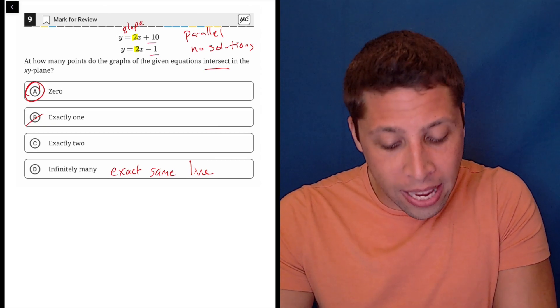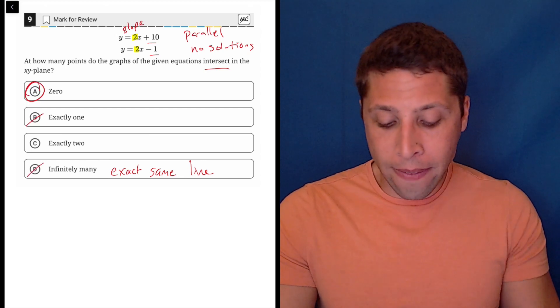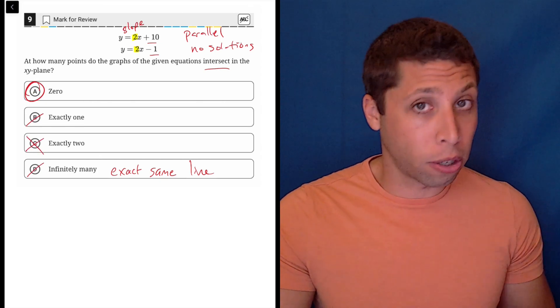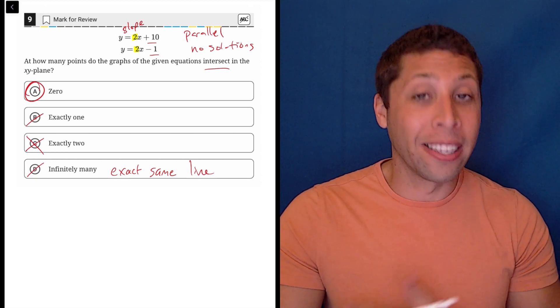That's not happening because the 10 and the negative 1 are obviously different numbers, so that's not going to work here. And then choice C makes zero sense. That's not ever possible with lines because lines don't curve. So they can never intersect any more than one time unless it's infinitely many.